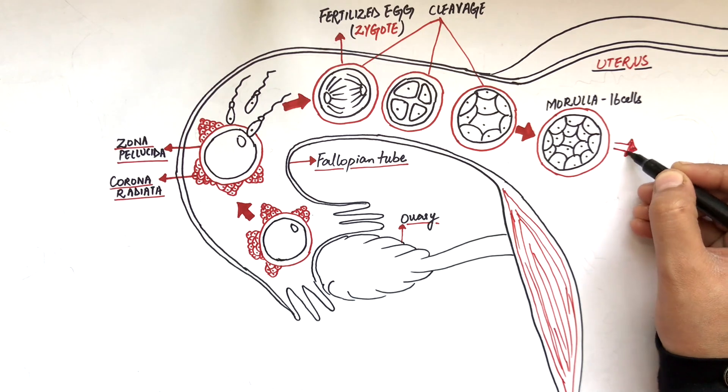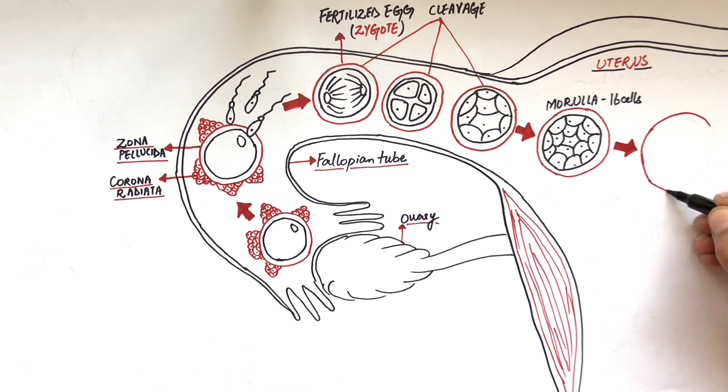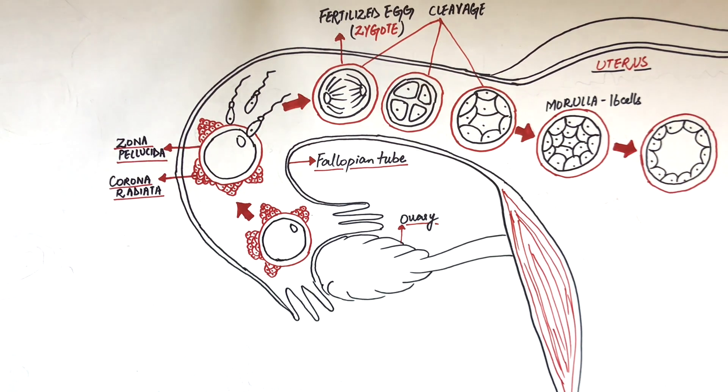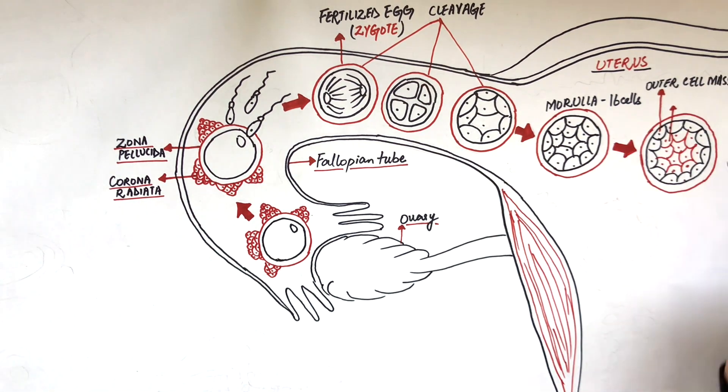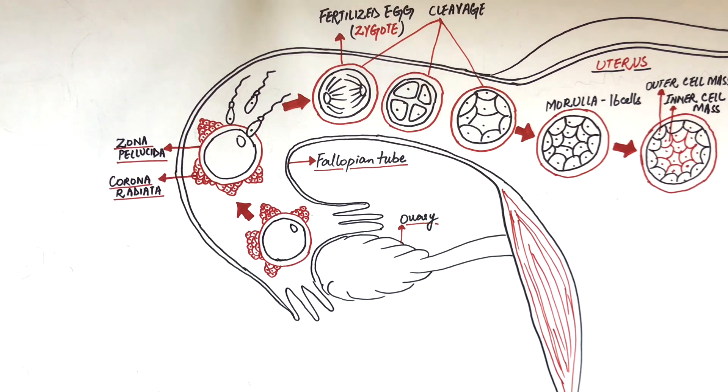The morula will undergo cell division and convert into a 32-cell mass called the blastula. The blastula contains two groups of cells: the outer cell mass lining the periphery and the inner cell mass at the center. The future baby will develop from this inner cell mass, and the outer cell mass will form supporting tissues like the placenta.